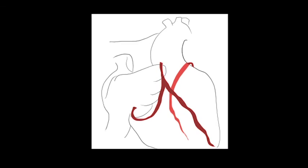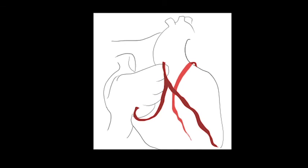The coronary arteries usually originate from the two aortic sinuses that are adjacent to the pulmonary trunk, but can have different courses, possibly complicating the surgical repair.